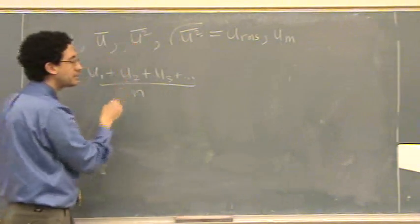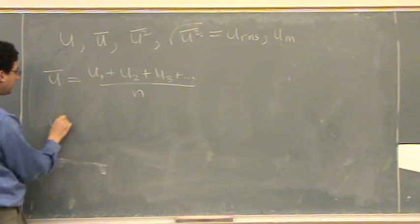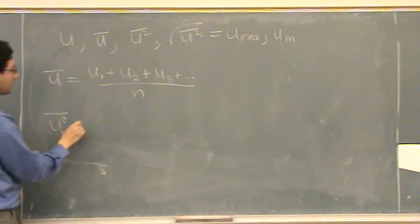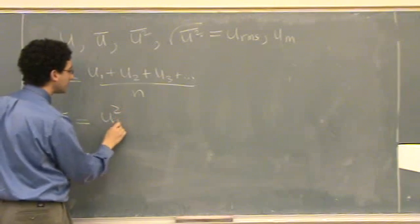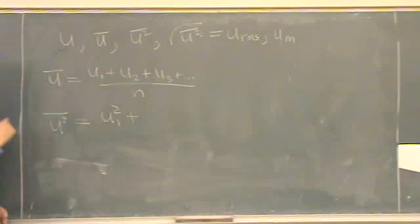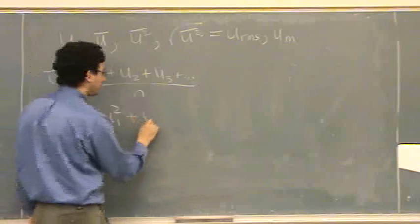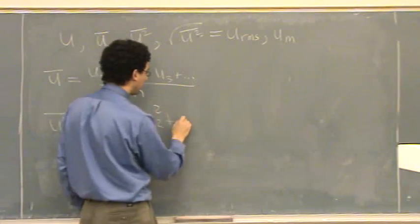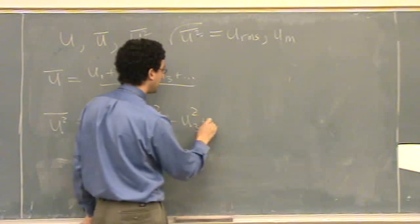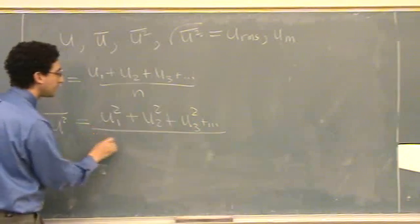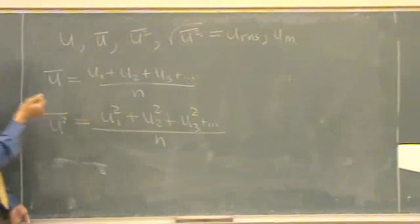The average square, this is an important one to know. The average square means that you add up the squares of each one. So velocity of 1 squared, plus velocity of 2 squared, plus velocity of 3 squared, dot dot dot, all the way up, and divided by the total number, I'll just say N.